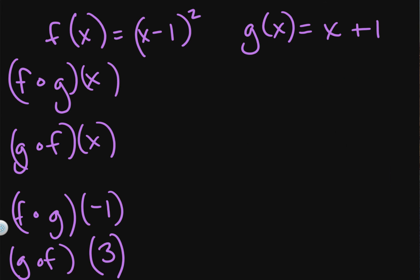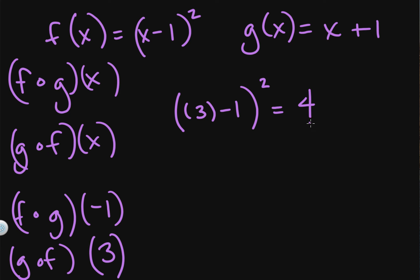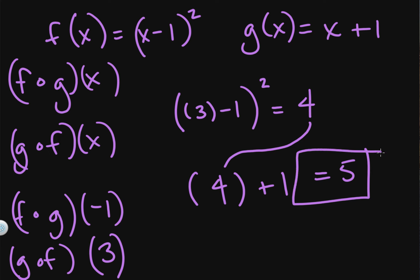We can do the same for g of f of 3. Plug 3 into f of x: (x minus 1) squared with x equals 3 gives 2 squared, or 4. Then take that 4 and plug it into g of x — x plus 1 — giving us 5. This is something new and it takes practice. Check out the next video where we talk about finding the domain of a composition of functions.